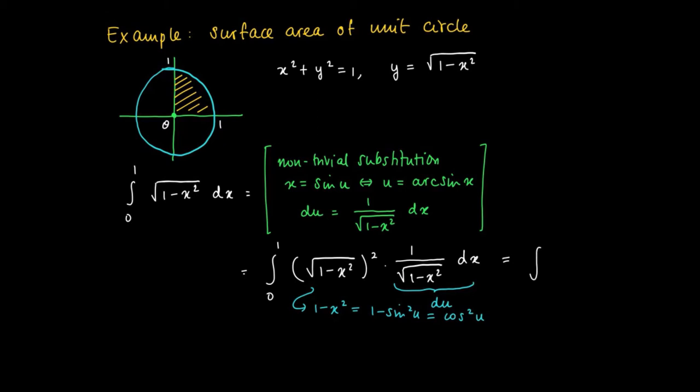If x ranges from 0 to 1, then u ranges from the arcsine of 0 to the arcsine of 1. And we may replace 1 minus x squared by the cosine squared of u du. So we replace our hard integral in terms of the square root of 1 minus x squared in terms of a trigonometric function.